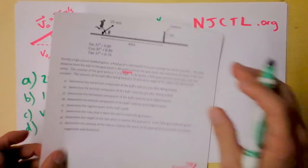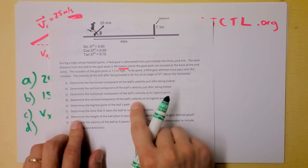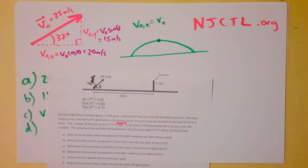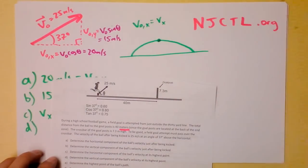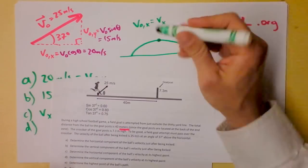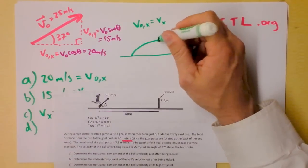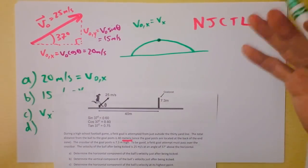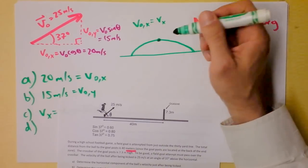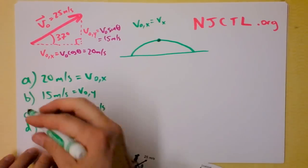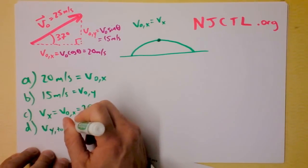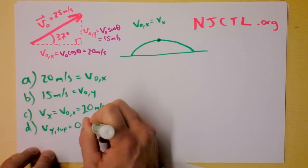Part D: determine the vertical component of the ball's velocity at its highest point. Everybody knows that to get to the top you have to stop going up. Between stopping going up and starting going down, you have to be stopped. So the final velocity in the y direction at the top — v_y top — is zero meters per second.